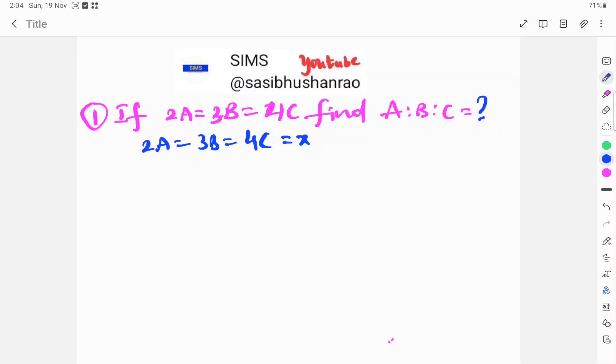Welcome to Sims. Today's topic: if 2A equals 3B equals 4C, find A is to B is to C.